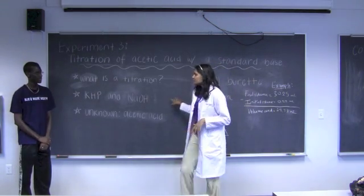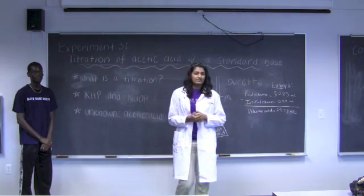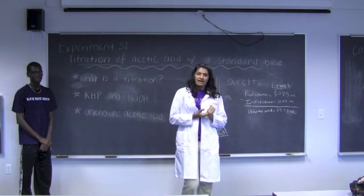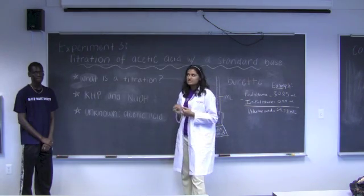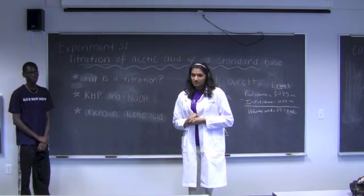In the first part, we're using KHP because it has a very large molecular weight, which means that if we miscalculate by 0.1 grams, it won't affect the results very much. However, if we used something which was 40 grams per mole and we calculated to 40.1 grams, then we would have a larger error.